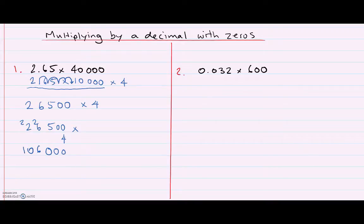Meaning that my final answer to 2.65 times 40,000 is 106,000. And I kind of gather that that would be my answer because I've got 2.65, which is close to 3, and I'm multiplying it by 40,000.